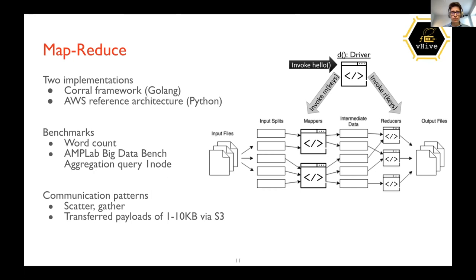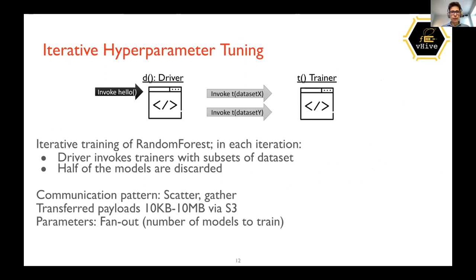As in any MapReduce, the communication patterns are scatter-gather. There is also a function for iterative hyperparameter tuning, consisting of a driver and trainer function, where the trainer trains different models with different parameters. Training happens iteratively with the driver and worker trainers using subsets of datasets, reducing the number of trainers and models produced each iteration. This function aims at benchmarking workloads that dynamically change their compute needs.